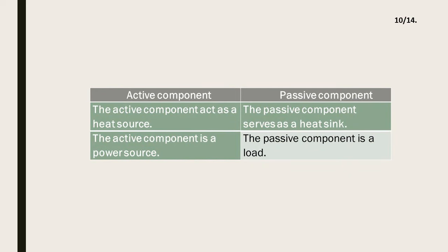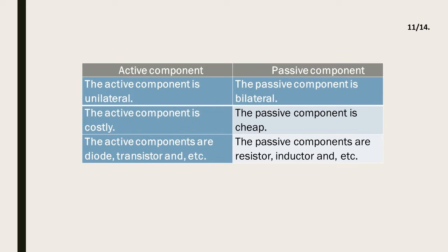The active component acts as a heat source; the passive component serves as a heat sink. The active component is a power source; the passive component is a load. The active component is unilateral; the passive component is bilateral. The active component is costly; the passive component is cheap. Examples of active components are diodes, transistors, and others. Examples of passive components are resistors, inductors, and others.